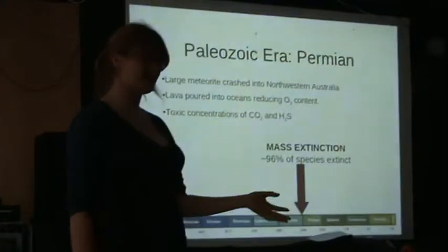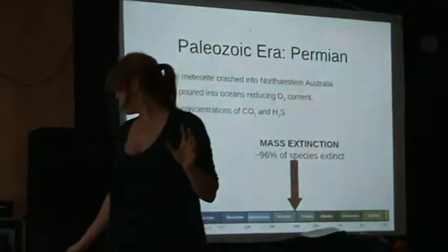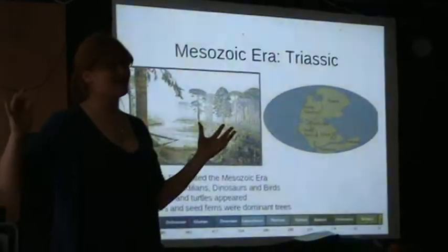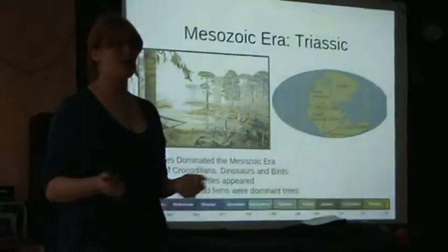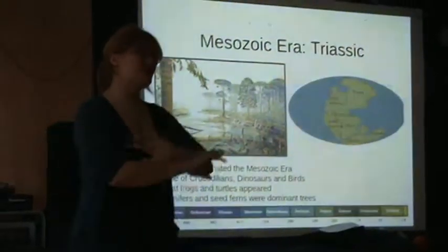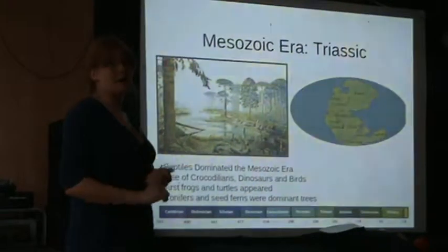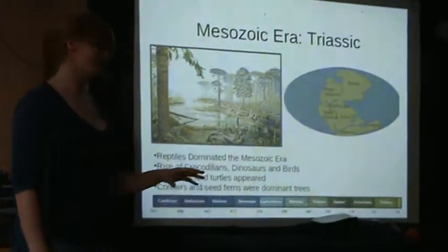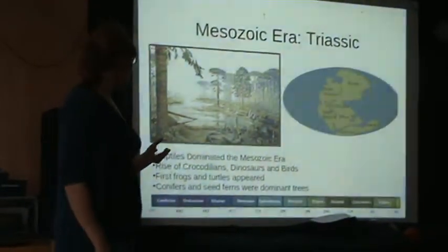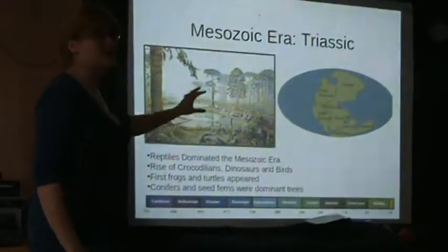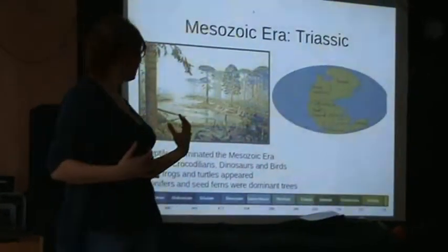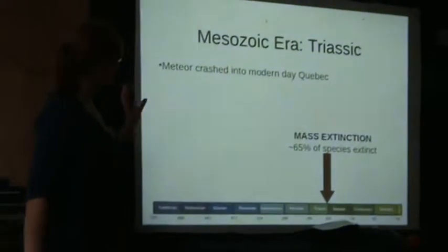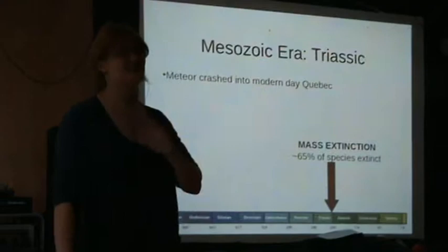This depicts the end of the Paleozoic era. Moving into the Mesozoic era, life is very sparse. The first species that entered the Triassic period were on a nearly empty planet, so there was lots of room for evolutionary radiation and change. Reptiles dominated this era — the reptiles were the kings of the Mesozoic. We saw the rise of crocodilians, dinosaurs, and birds. The first frogs and turtles appeared, and conifers and seed ferns were the dominant trees. Pangea also started to gradually break apart. At the end of the Triassic, a meteor crashed into modern-day Quebec and wiped out 65% of species.